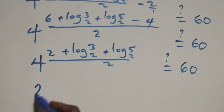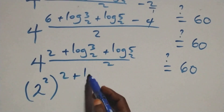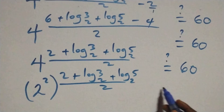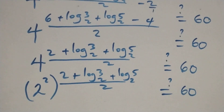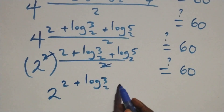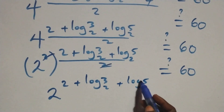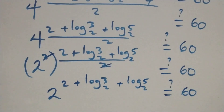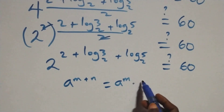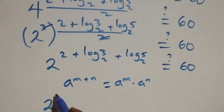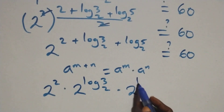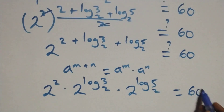We write four as two squared. So we have two squared raised to power: two plus log three base two plus log five base two, all over two. This equals sixty. Using the law: a raised to power (n plus n) equals a raised to power n times a raised to power n, we split this as two raised to power two times two raised to power log three base two times two raised to power log five base two equals sixty.